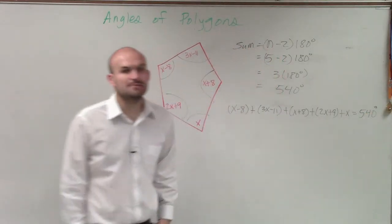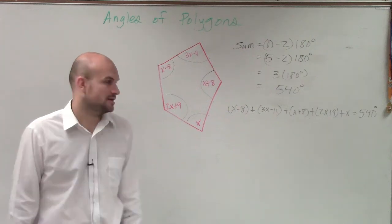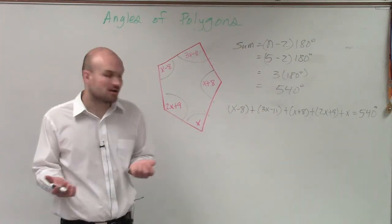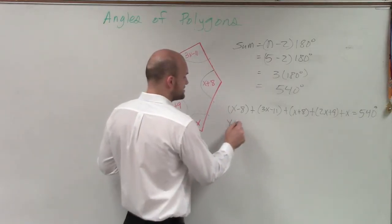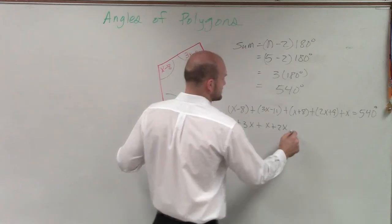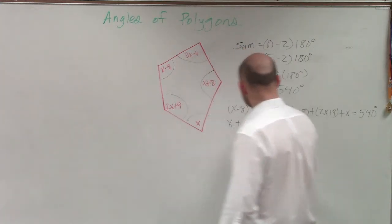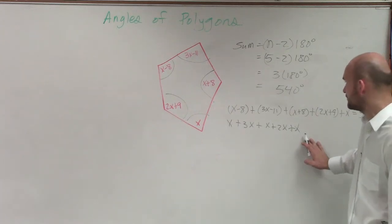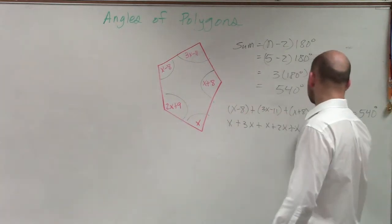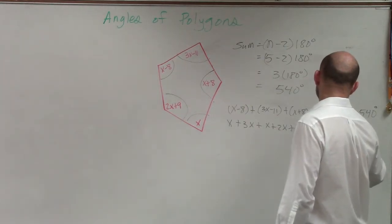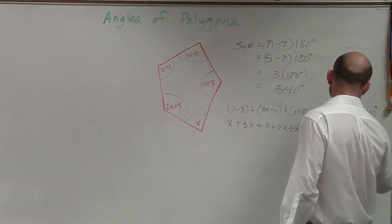Now I need to combine my like terms. So I'm going to rearrange this so I can add all the x's and then add all my numbers. So I can have x plus 3x plus x plus 2x plus x. You don't have to do this, but I'm just trying to help you guys out. And then I take all my numbers minus 8 minus 11 plus 8 plus 9 equals 540.